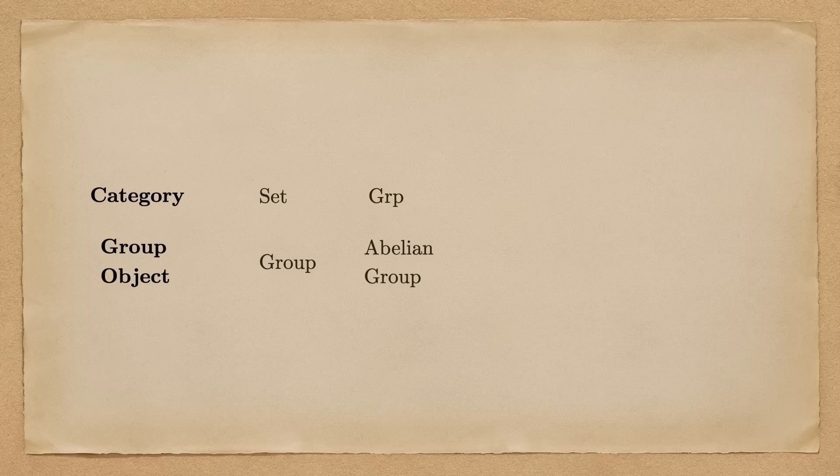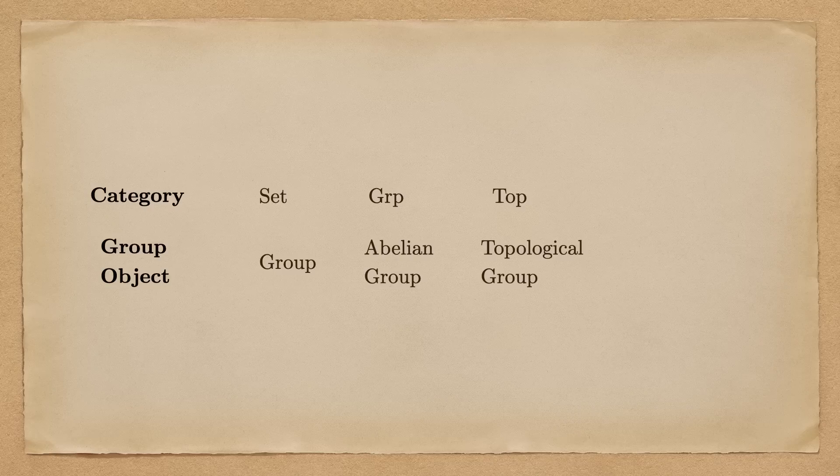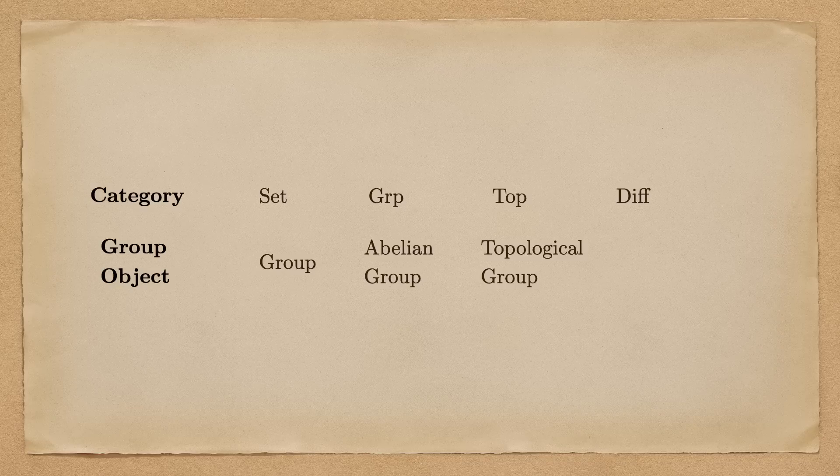By this definition, a group object in the category set is a group. A group object in the category of groups is an abelian group, which can be proven using the observation that the inverse operation in the category of group is a group homomorphism, hence must be abelian. A group object in the category of topological spaces is a topological group. And finally, a group object in the category of smooth manifolds with smooth functions between them is precisely a Lie group.